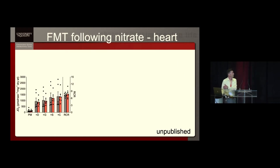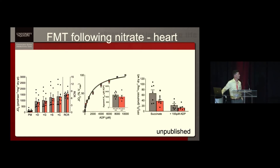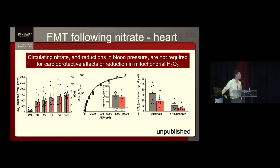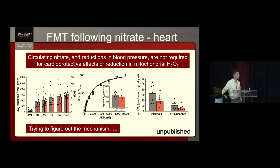When we looked at the LV bioenergetics, there was no change in respiration or ADP sensitivity — which there wasn't when they were consuming the nitrate in the drinking water either. But the gavage also decreased mitochondrial reactive oxygen species production. So it seems like circulating nitrate and reductions in blood pressure are not required for the cardioprotective effects we're seeing in the LV, and in particular with that reduction in mitochondrial reactive oxygen species. I would love to tell you what the mechanism is, but unfortunately we're at a loss at this point, and we're trying to figure that out with ongoing gavage studies and metabolomics. I think it's pretty interesting that it is so powerful and it happens so quickly.